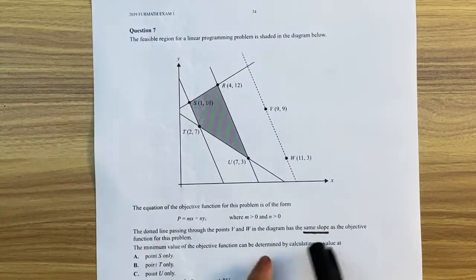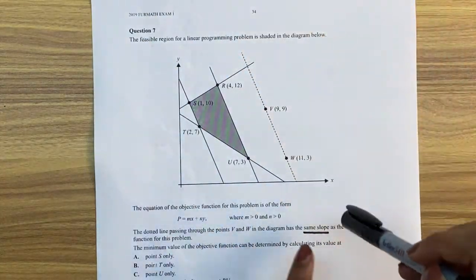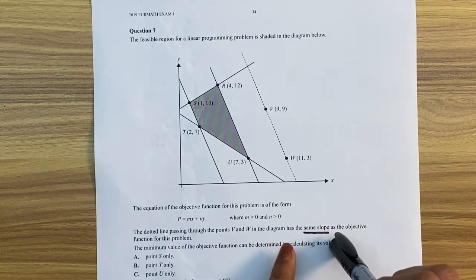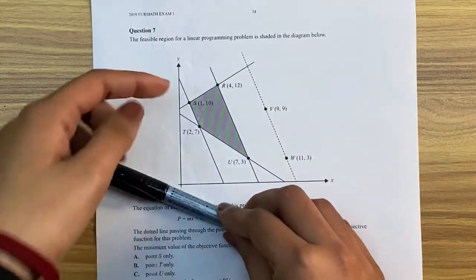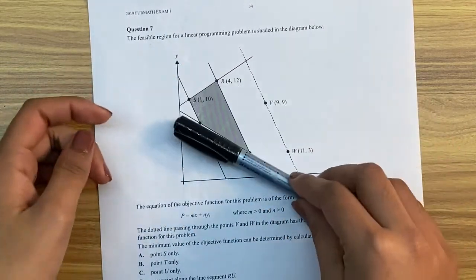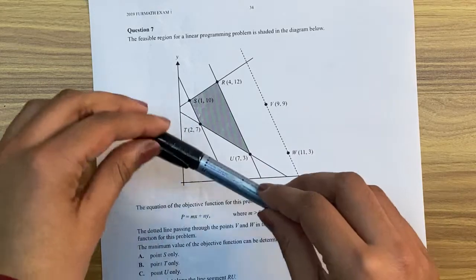So we're told here that this dotted line has the same slope. And remember, the slope is the only thing that matters in a sliding line, because if you're sliding the line, the y-intercept does not matter at all, because it can be slided anywhere. Only the gradient matters.